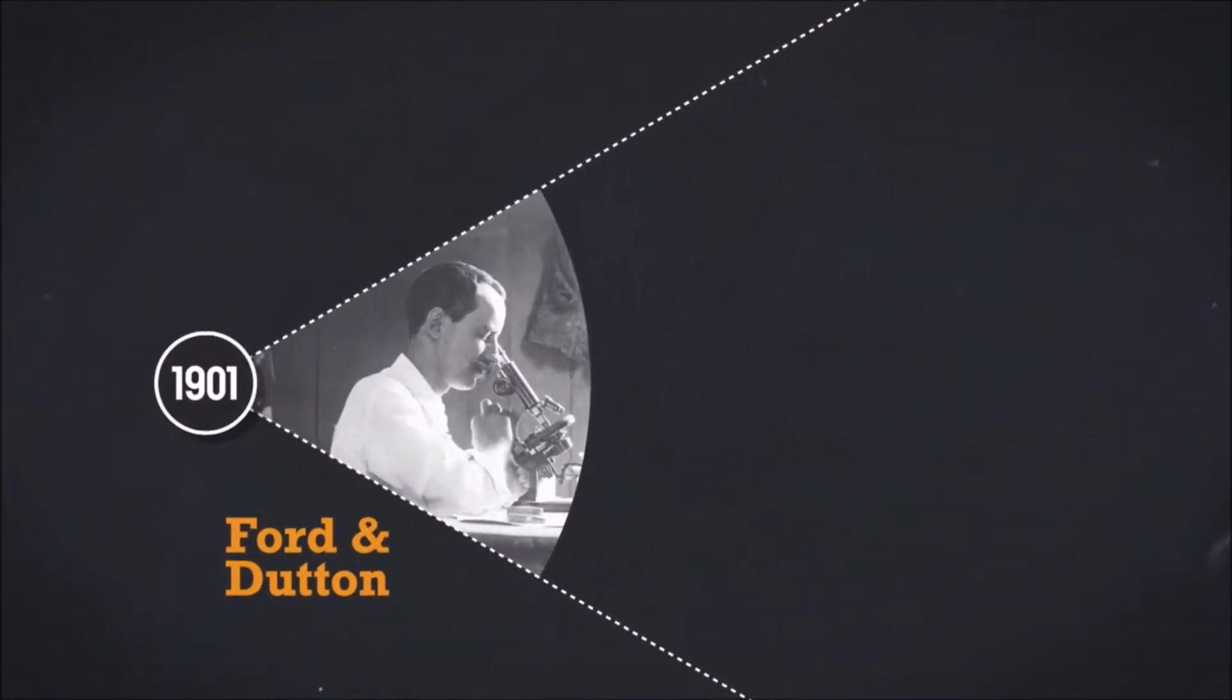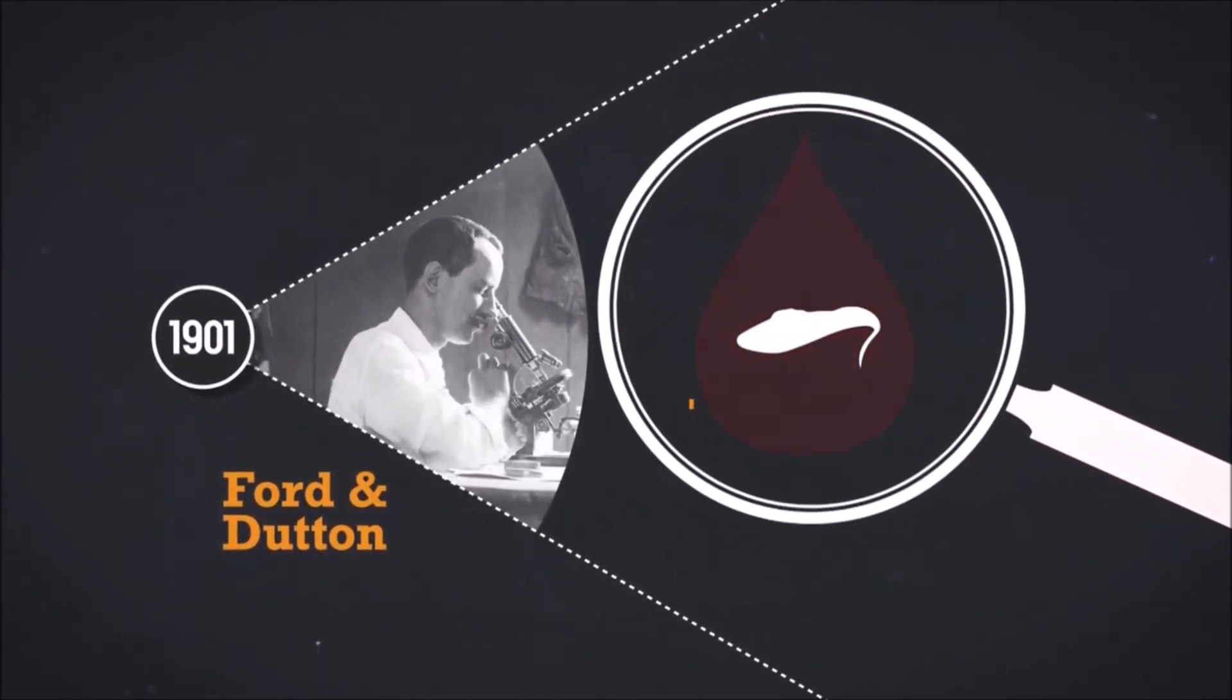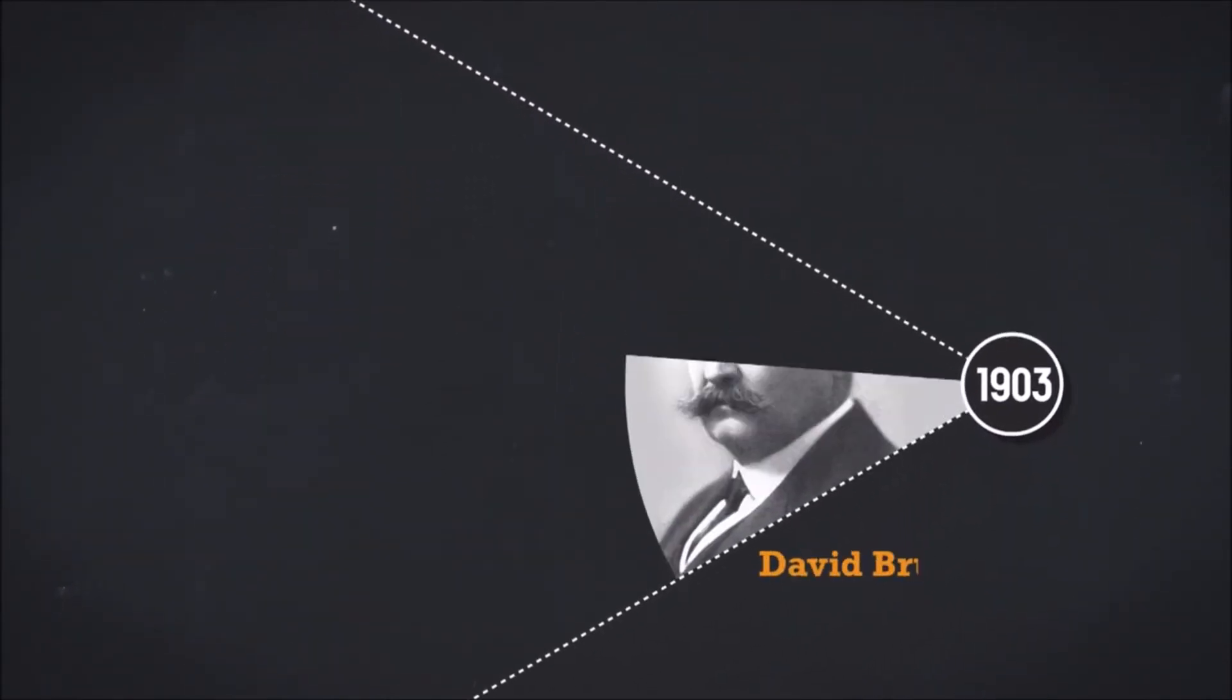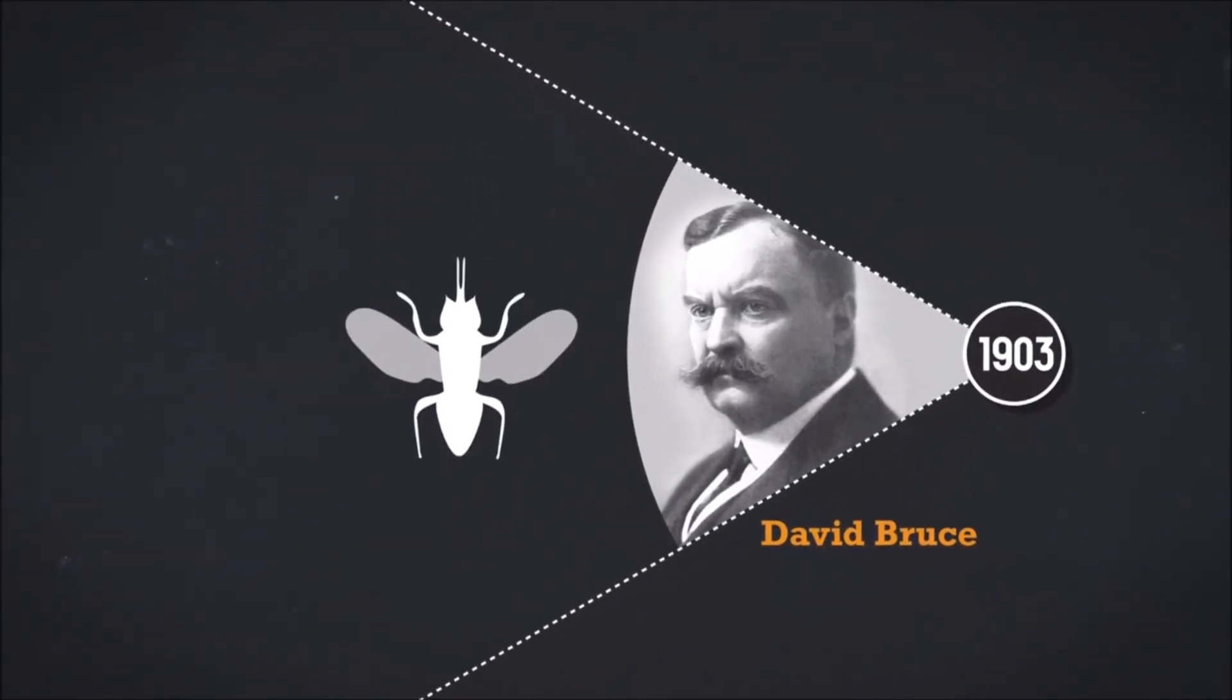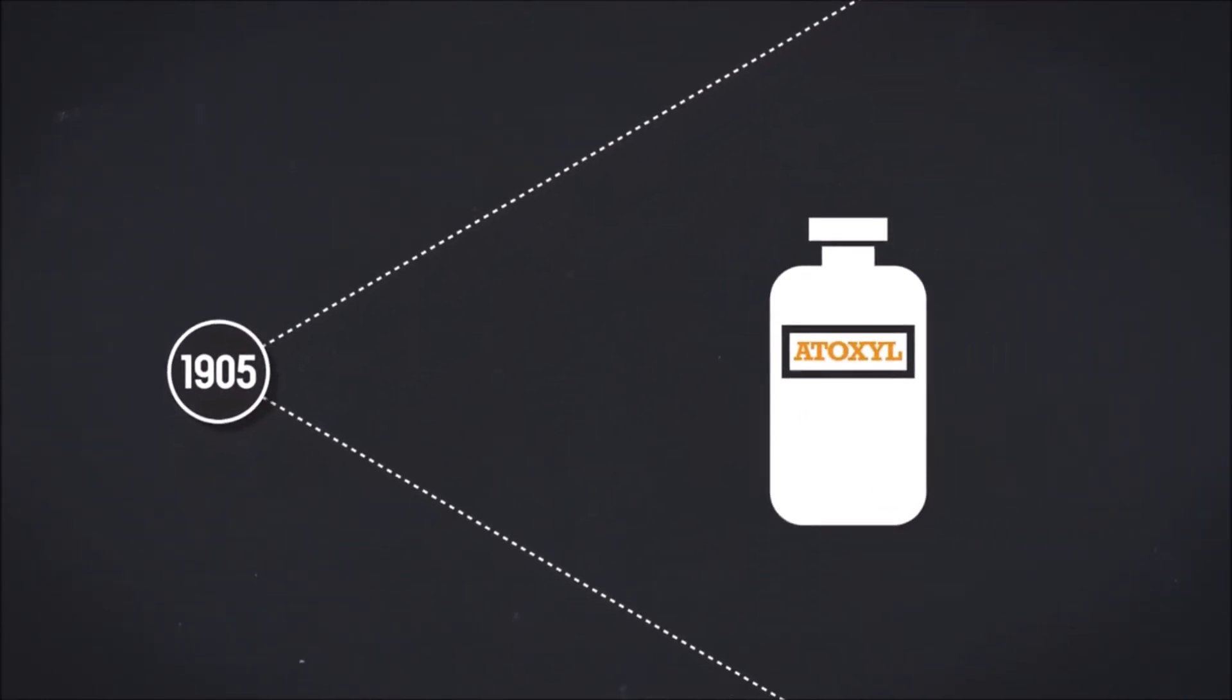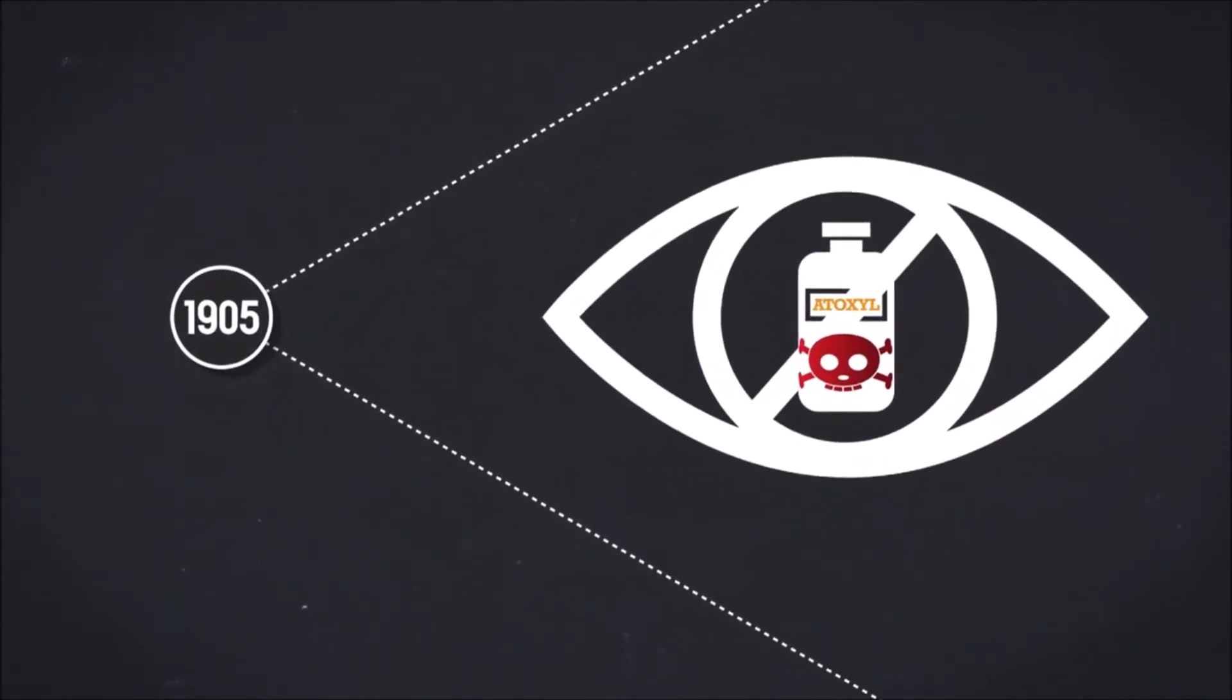In 1901, English biologists Ford and Dutton identified in patients' blood the cause of the disease, a parasite called the trypanosome. In 1903, a British physician, David Bruce, discovered the vector of the parasite, the tsetse fly. In 1905, tests were performed on the first treatment, atoxil, a highly toxic arsenic compound that can cause blindness.